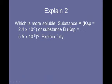Which is more soluble? Substance A with a KSP of 2.4 times 10 to the negative 7, or substance B with a KSP of 5.5 times 10 to the negative 5? Well, the answer is substance B. Why is it? Because the greater the KSP, the more soluble the substance.